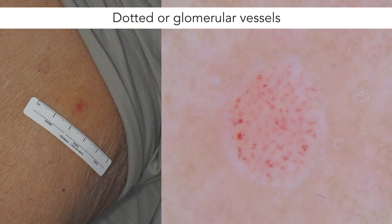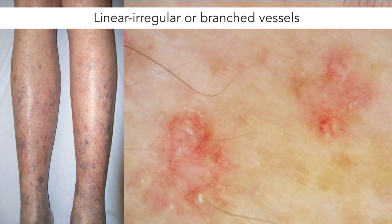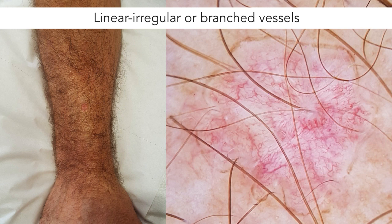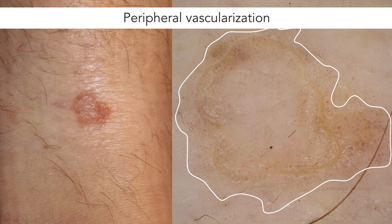This patient with DSAP had multiple lesions in which the vessels were linear and branched. In this solitary porokeratosis, we see very prominent vasculature with linear branched vessels. As you can also see, most of the keratin rim is pigmented in this case.